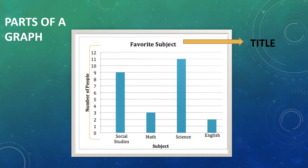Here, in this example, the title is 'Favorite Subject', which is written on the top of the graph. Second is labels.